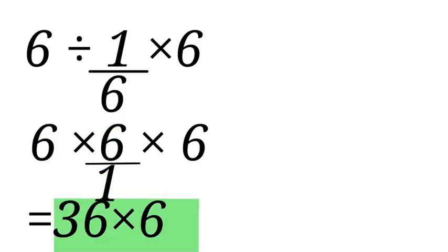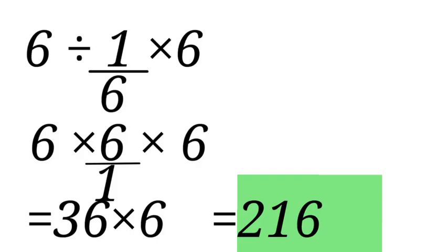Now let's multiply with the last 6 that was in the question. So we have 36 times 6, that will give us 216.